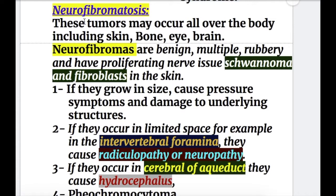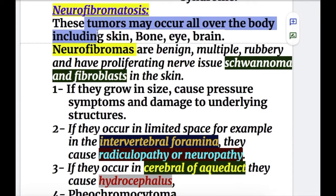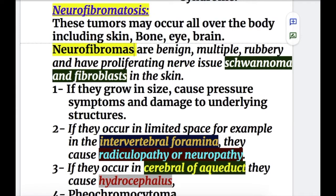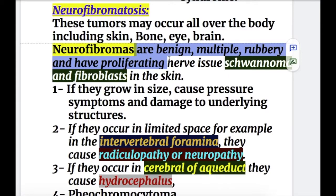In neurofibromatosis, tumors may occur all over the body, including the skin, bones, eyes, and brain. What is a neurofibroma? Neurofibromas are benign, multiple, rubbery tumors that contain proliferating nerve tissues, Schwann cells, and fibroblasts in the skin.